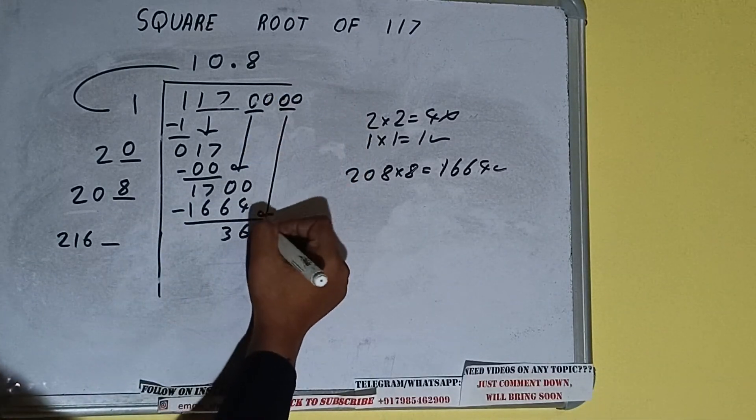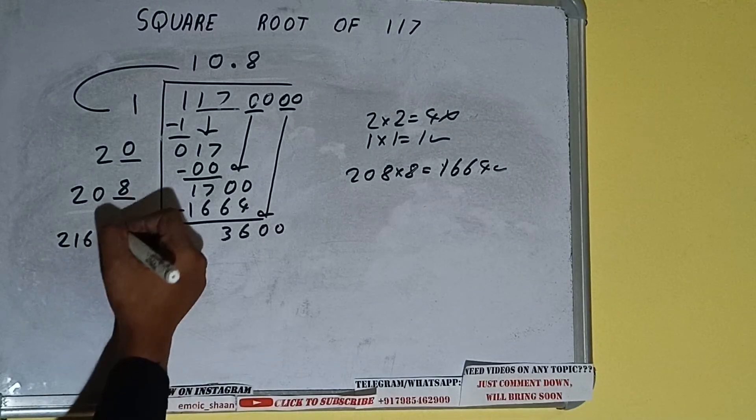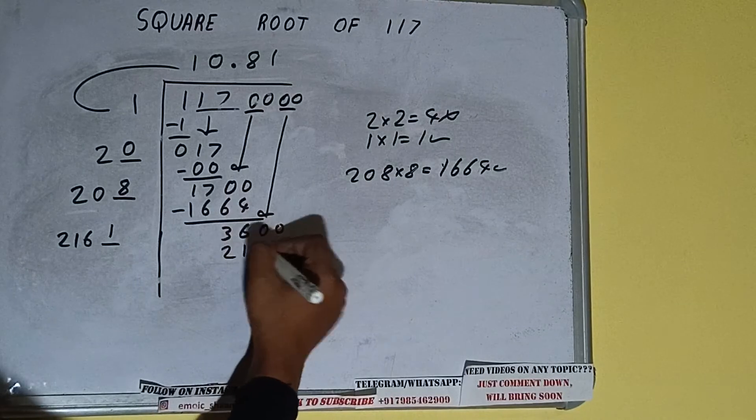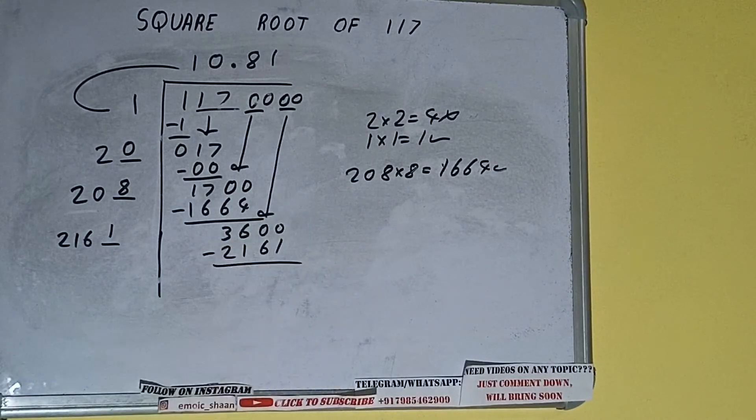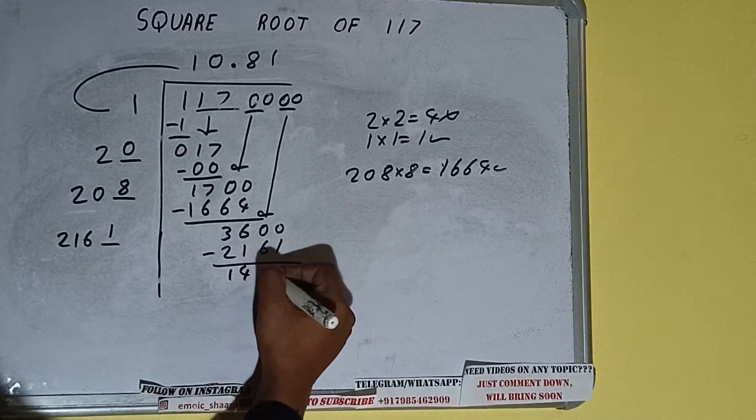So bring the next pair of zeros down and it will be 3600. So we can write 1 here and 1 here. It will be 2161 subtract. And we'll be left with 1439.